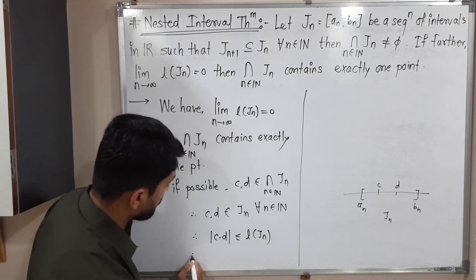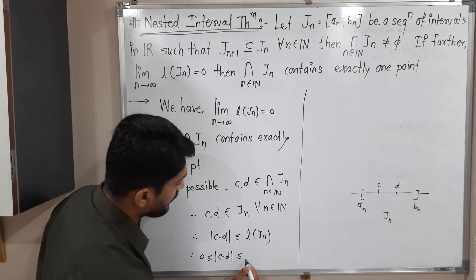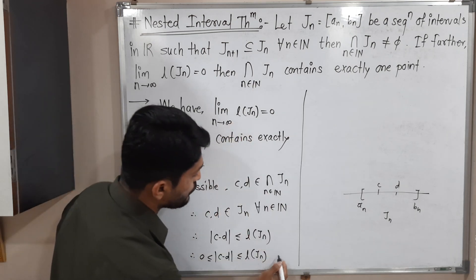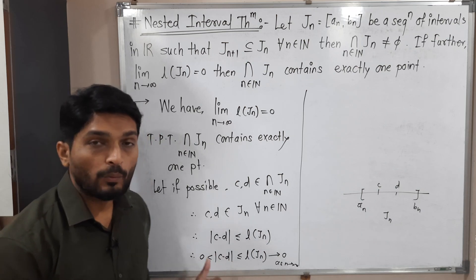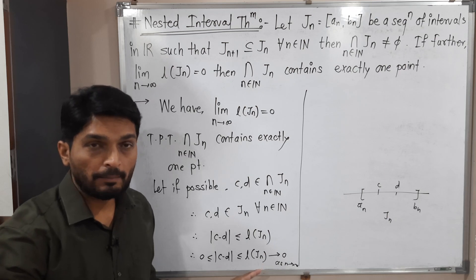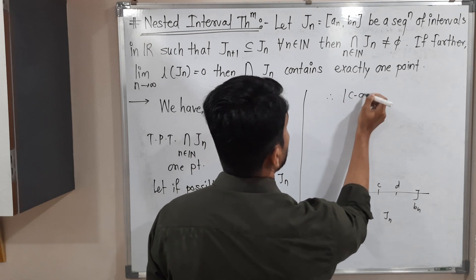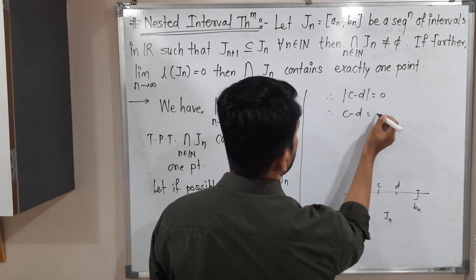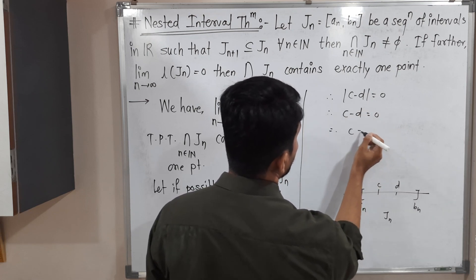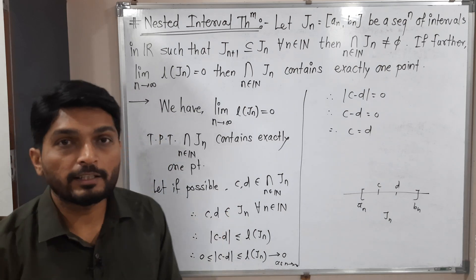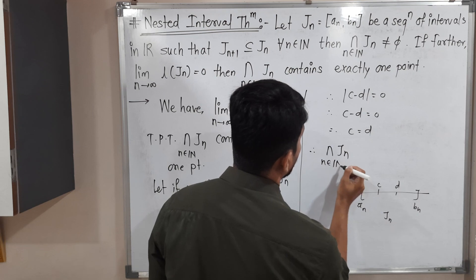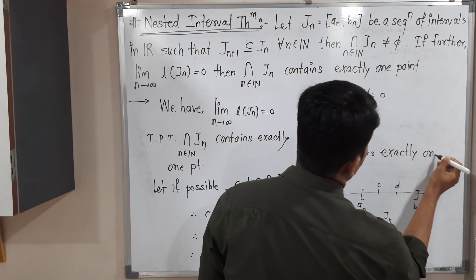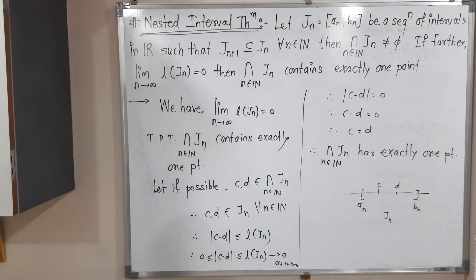We have 0 ≤ |c − d| ≤ length(J_n), and the given condition says length(J_n) → 0 as n → ∞. By the squeeze theorem, |c − d| = 0, which means c − d = 0, so c = d. This contradicts our assumption that c and d are two distinct points. Therefore the intersection contains exactly one point, completing the proof of the Nested Interval Theorem.